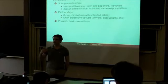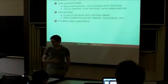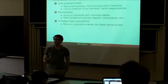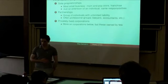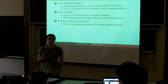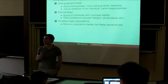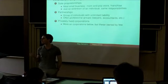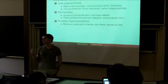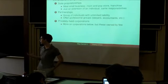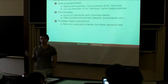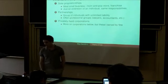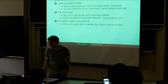The next level of corporatization is a privately held corporation. The key difference between a private and a public corporation is that a private corporation is held by a very small number of people. There's no public price at which the shares of the company trade — it's owned by a small number of people who may engage in transactions with one another or other potential buyers, but in a very private way.